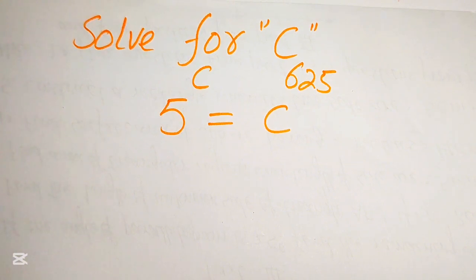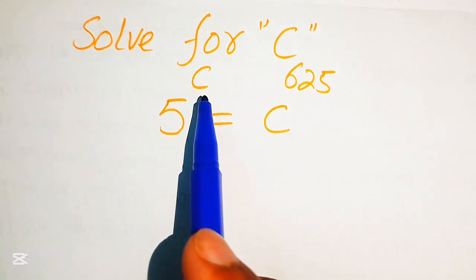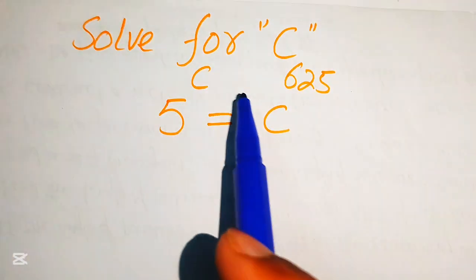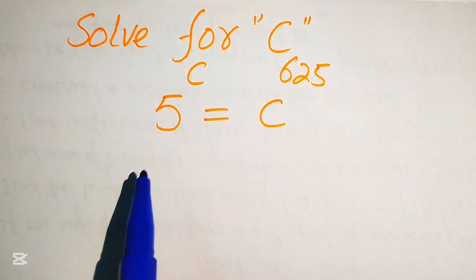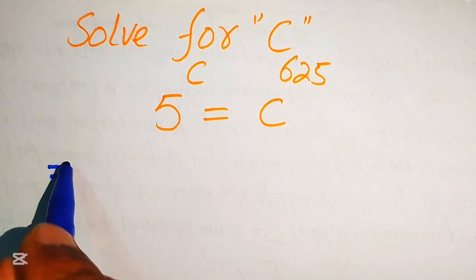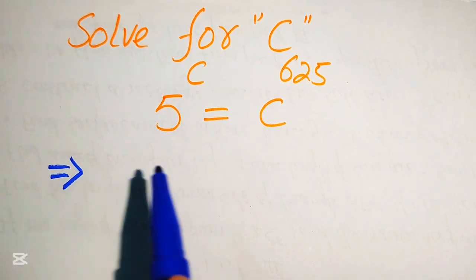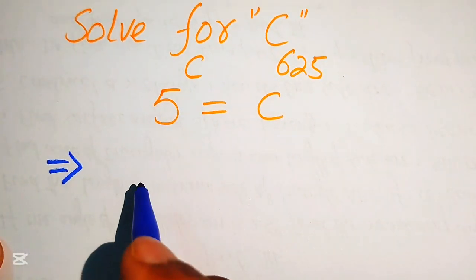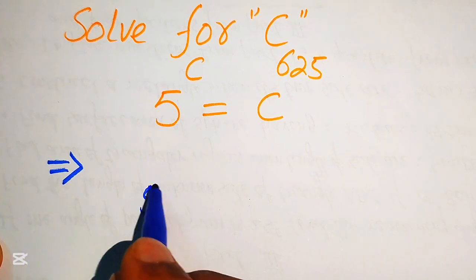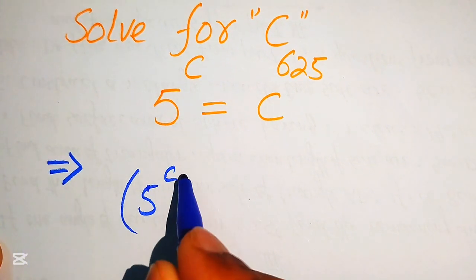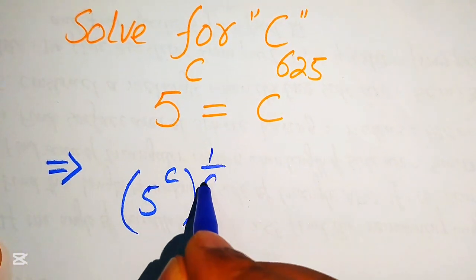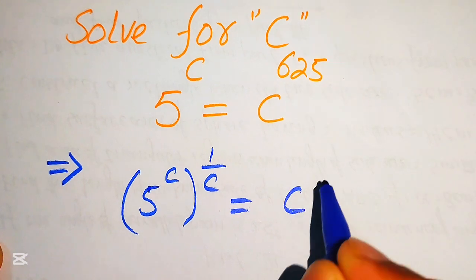First we need to move the variable terms to the right hand side and the constant terms to the left hand side. To eliminate c from the left hand side, we take the cth root on both sides — in other words, we take the 1 over c power on both sides.